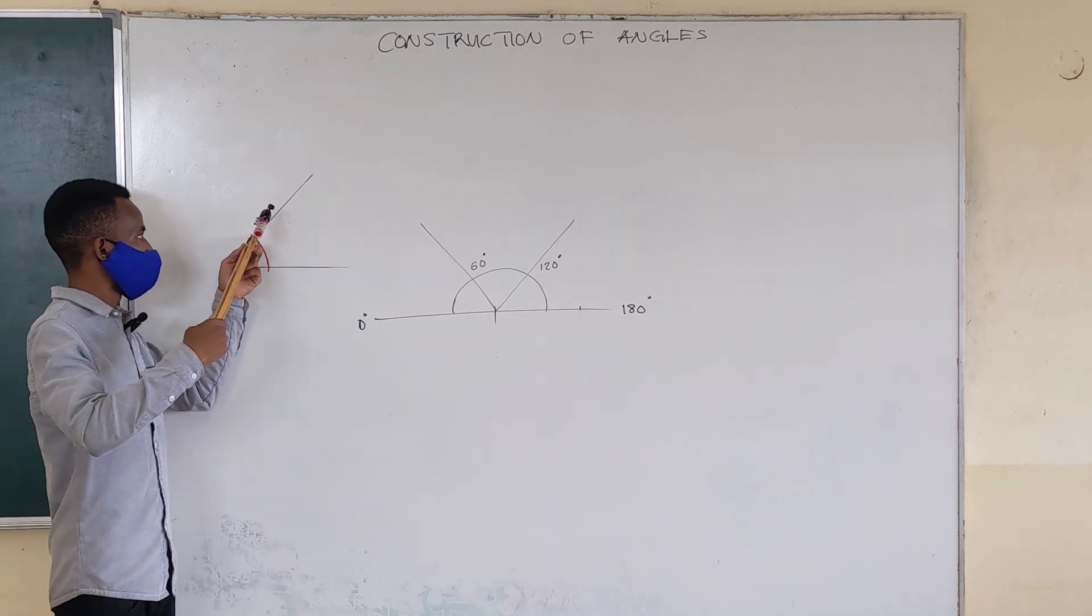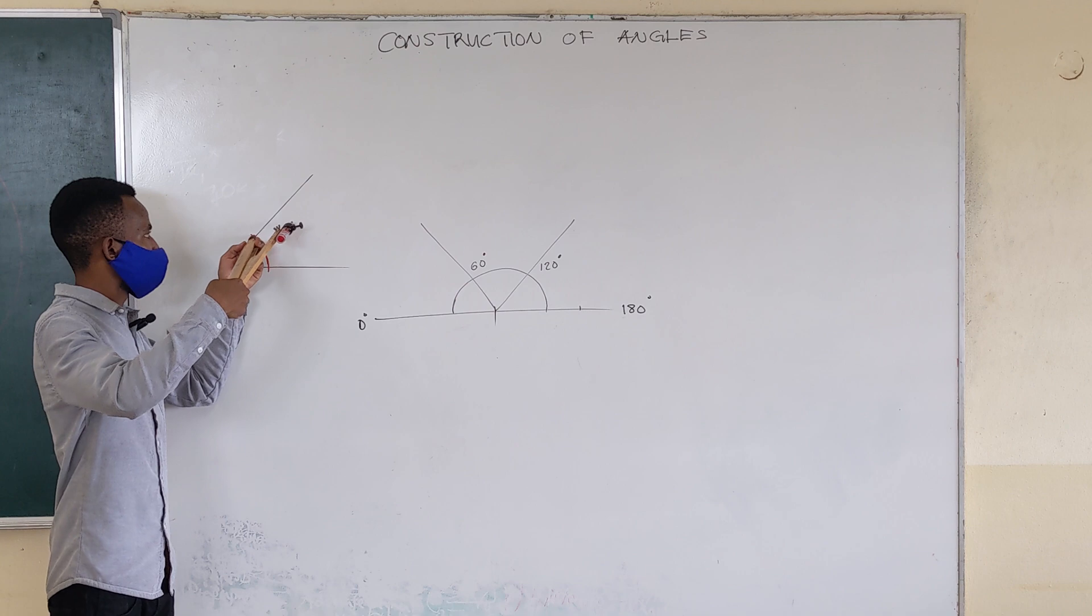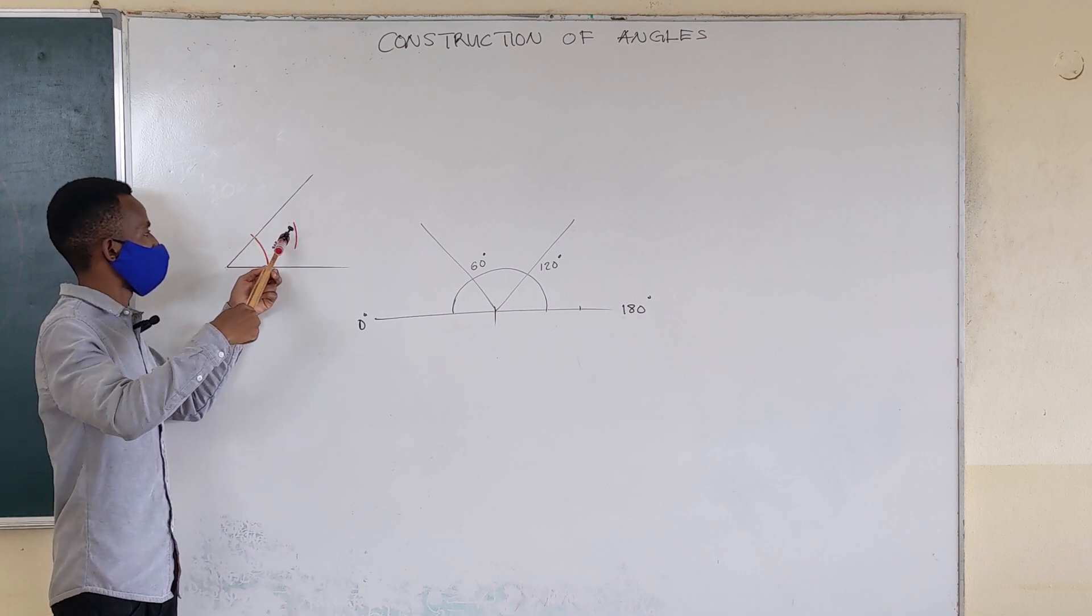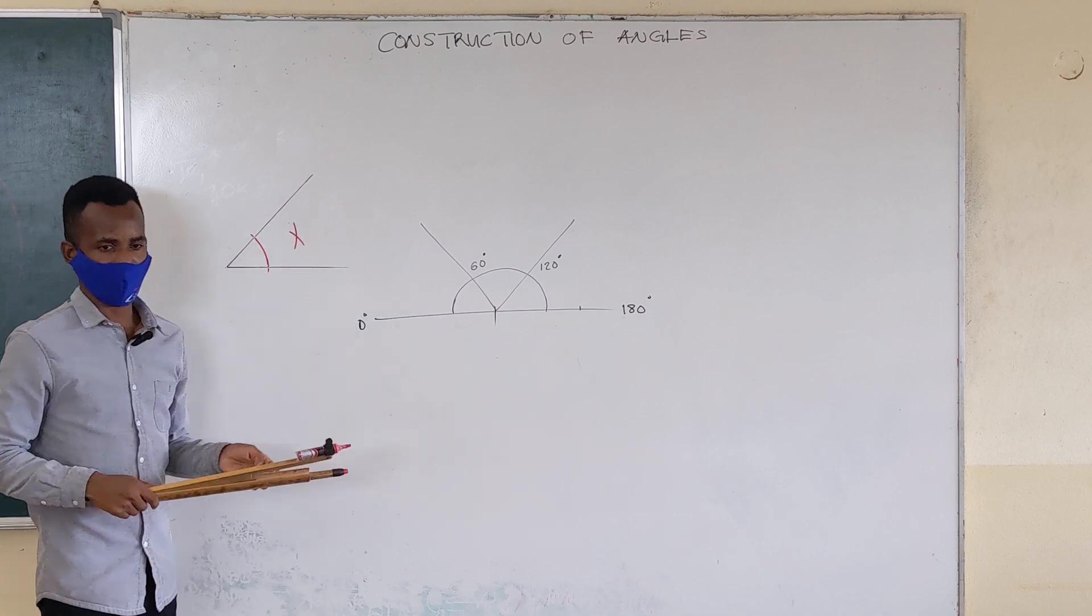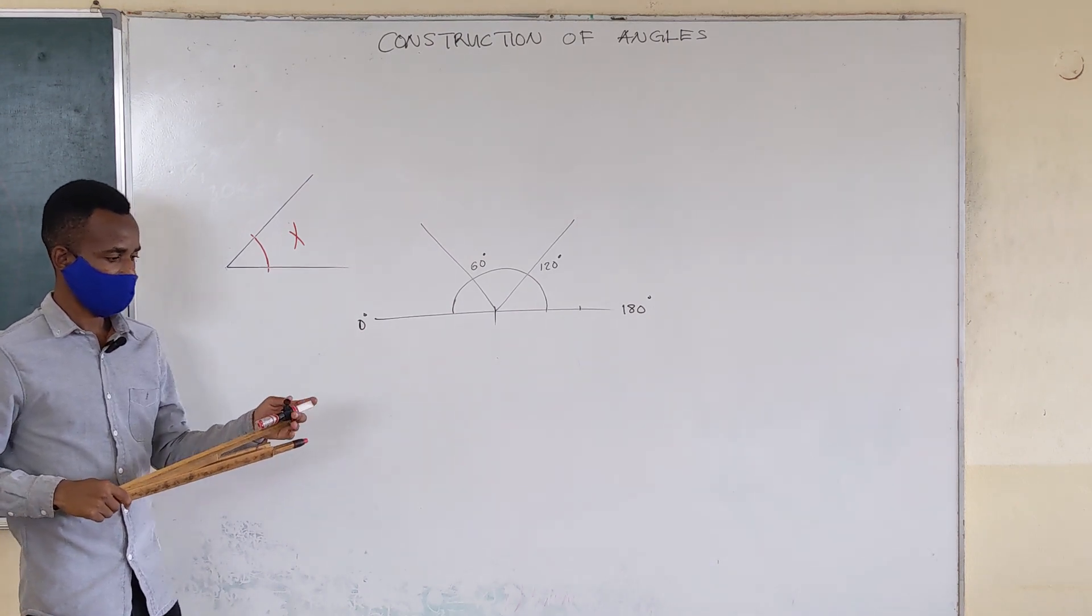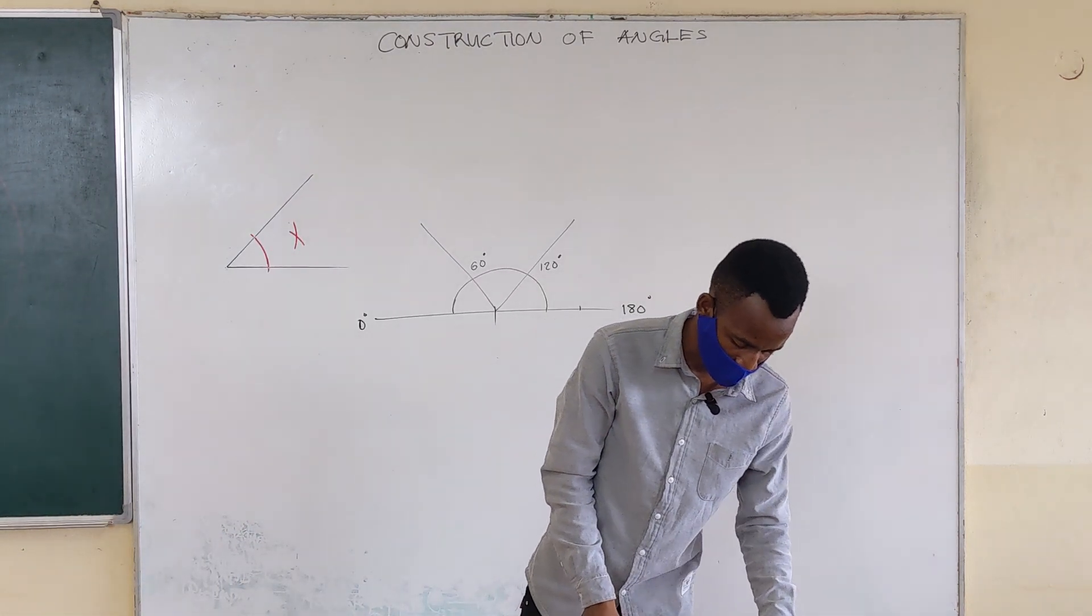From these two points, stand there, strike an arc. Stand there, strike an arc. And then draw the angle bisector.